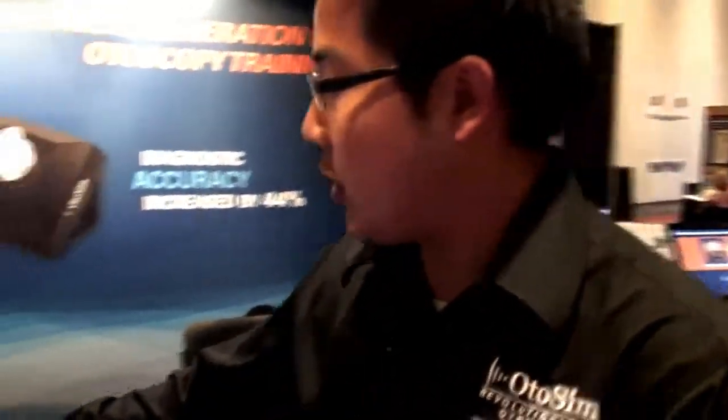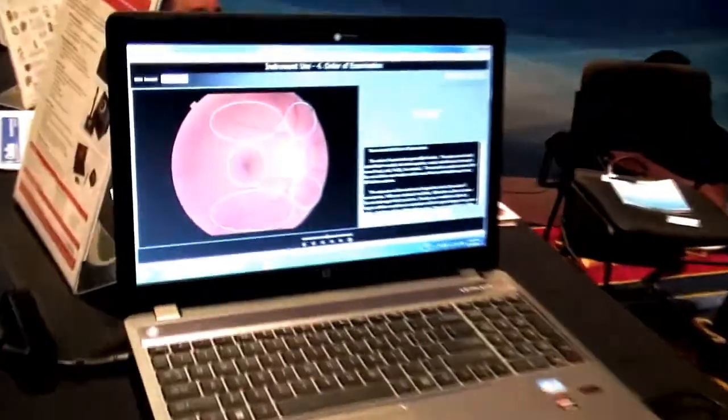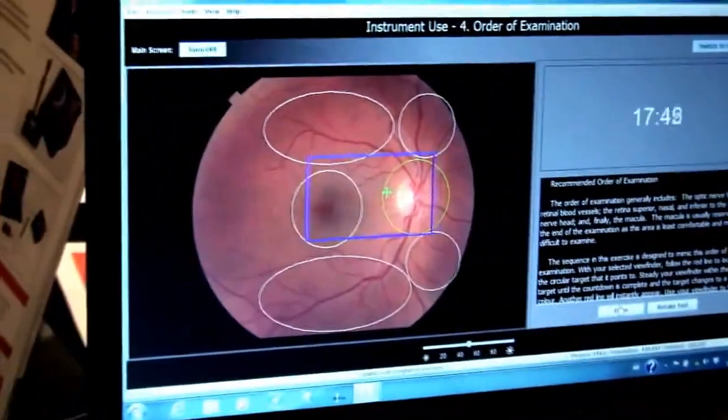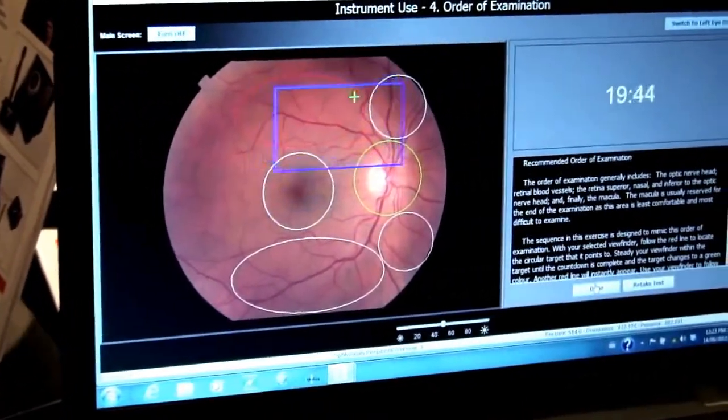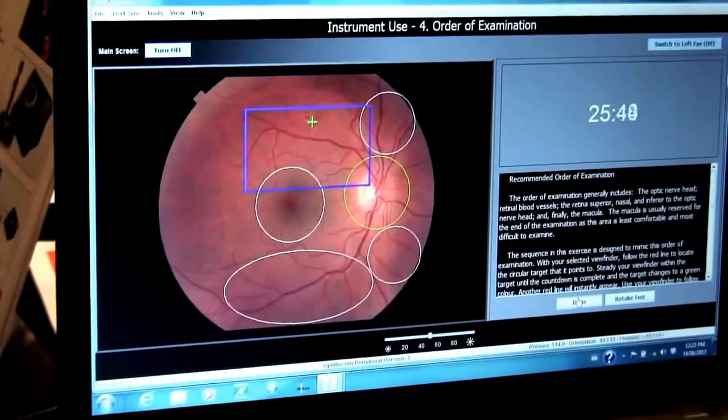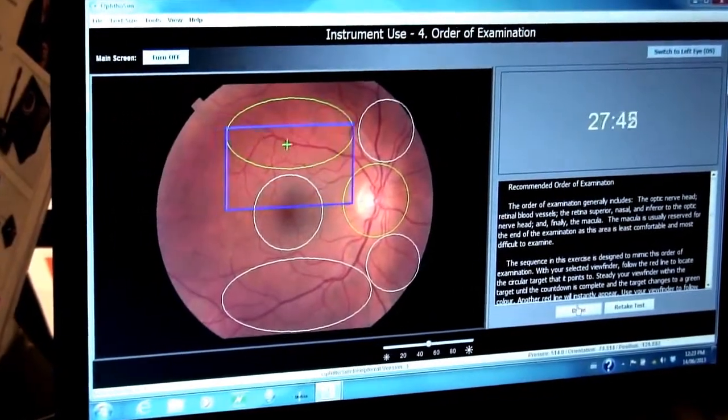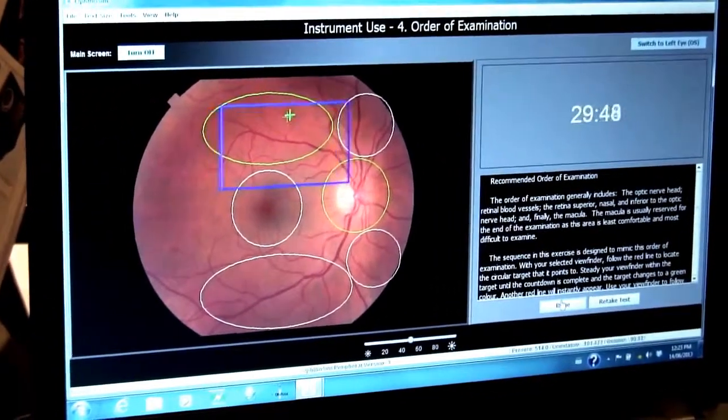For example here, if you look on the screen, we've got these big circles. As a student first starts off with the optic disc and then they'll move up here, which is the proper order to do an eye exam, they're supposed to review this area for a while until it hits green and then they go to the next area.